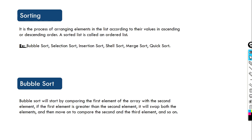Let's begin with understanding what sorting is. Many times we need to arrange items in a certain order, say ascending or descending, because it makes it easy to locate any item when it is in a sorted list. There are many ways to implement this sorting through programming, and these are what we call sorting algorithms.